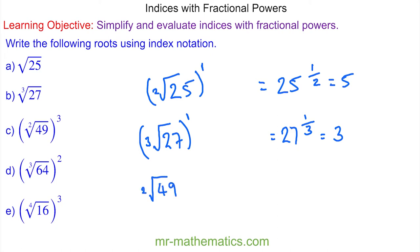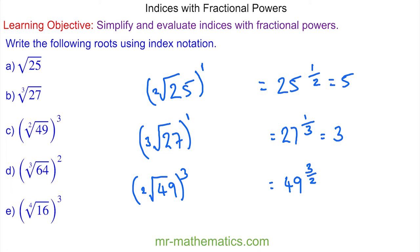For question c, we have the second root of 49 raised to the power of three. Our base is 49, our denominator is two, and our numerator is three. The square root of 49 is seven, and seven cubed is 343.